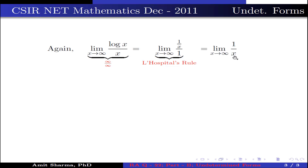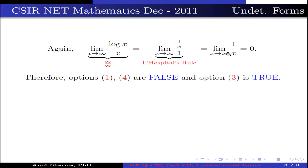Now substituting the limit we get 0. Therefore options 1 and 4 are false, and option 3 is true. Hence option 3 is true.